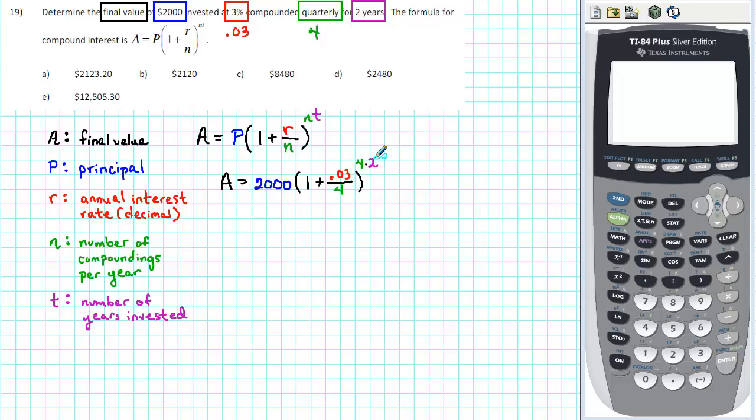Finally, use your calculator to evaluate. Enter 2,000 and then a left parenthesis, 1 plus .03 divided by 4, end parenthesis.